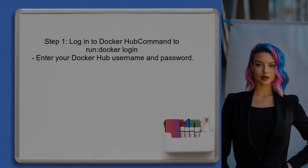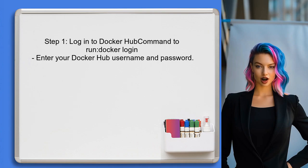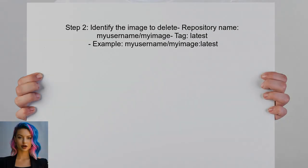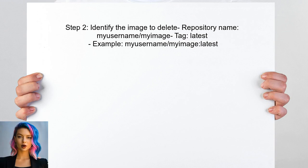To delete a Docker image from Docker Hub via the command line, the user first needs to log in to their Docker Hub account. This can be done using the Docker Login command. Once logged in, the user should identify the image they want to delete, including knowing the repository name and the specific tag of the image.